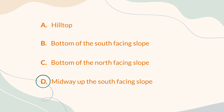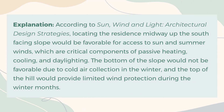The correct answer is D. Midway up the south-facing slope. Explanation: According to Sun, Wind, and Light: Architectural Design Strategies, locating the residence midway up the south-facing slope would be favorable for access to sun and summer winds, which are critical components of passive heating, cooling, and daylighting. The bottom of the slope would not be favorable due to cold air collection in the winter, and the top of the hill would provide limited wind protection during the winter months.